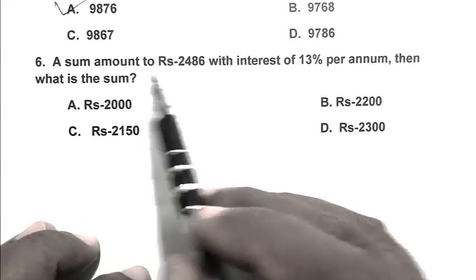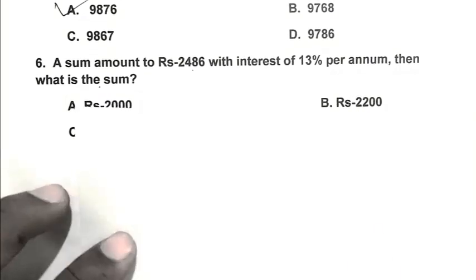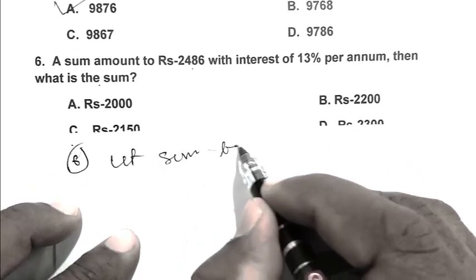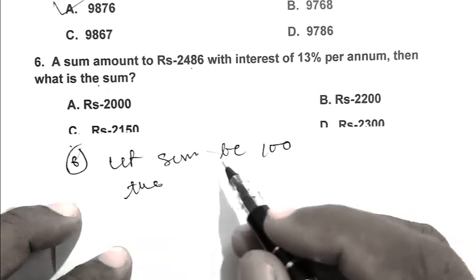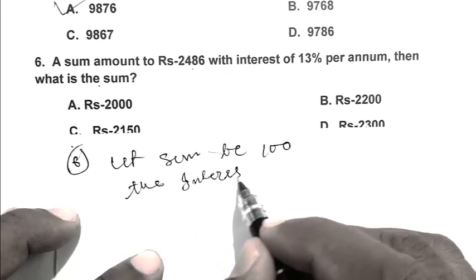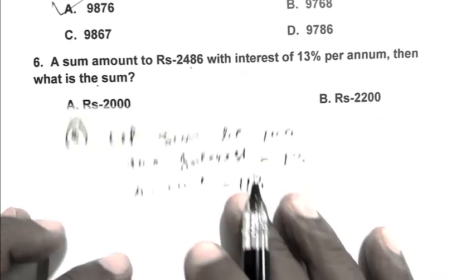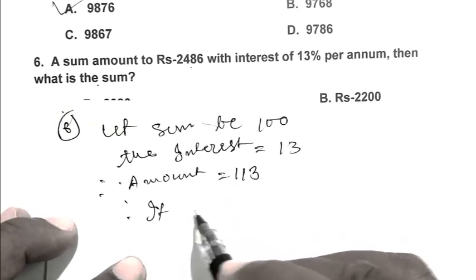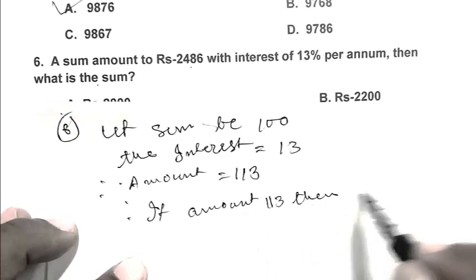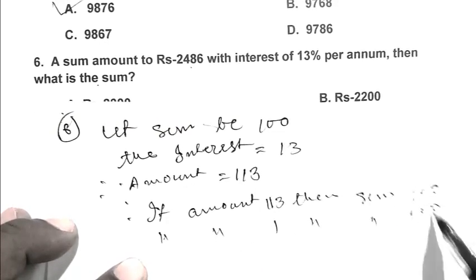Question number 6. A sum amounts to Rs. 2486 with interest of 13% per annum. Then what is the sum? Let sum be 100. Then interest 13%, so amount 113. If amount is 113 then sum is 100. If amount is 1, then sum is 100 upon 113.